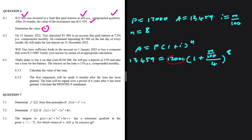We get (1 + m/400) to the power 8 equals 13,459 divided by 12,000. Note that m divided by 100 divided by 4 is the same as m divided by 400, so we write that instead.